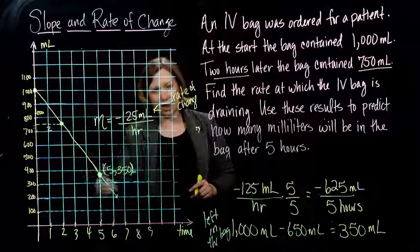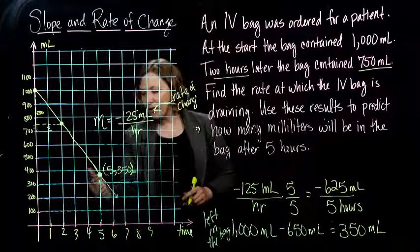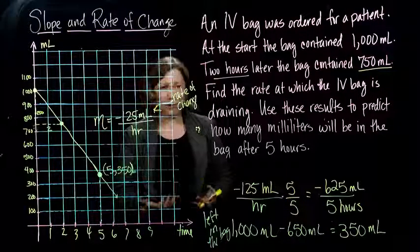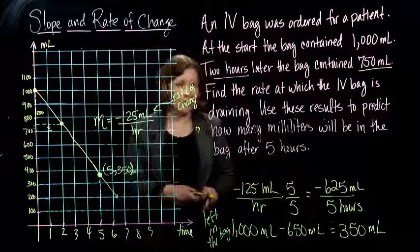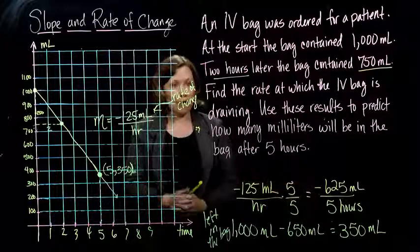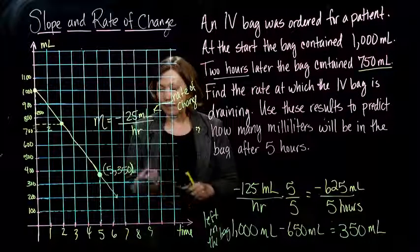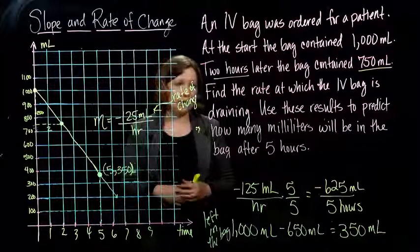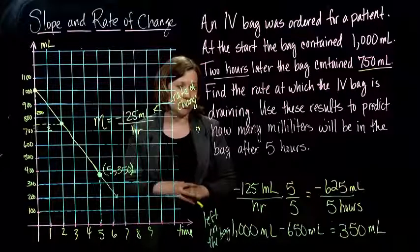But the problem with this is, if our line is not super perfect, and right, we landed between the 300 and 400, we could guess that that's 350, but we're not quite sure. So the most accurate way to figure it out would be to use the slope formula, figure out this slope, and then use that to figure out how much it will change in five hours.